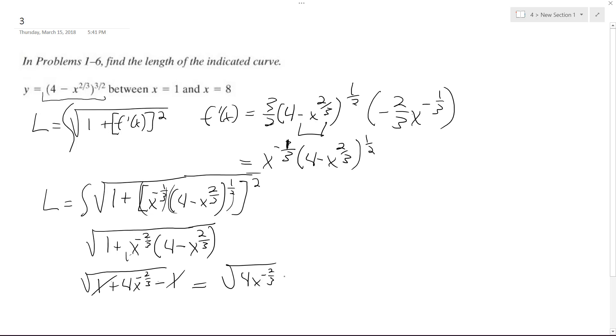And then we take the square root of that, and what we end up with ultimately is 2 x raised to the negative 1 third. Well that reduced down nicely, so now all we have to do is integrate this from 1 to 8.